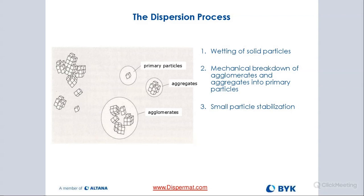Once we're at the aggregate level, the next step is to get down to the primary particle size. We use different technologies: going from agglomerate down to aggregate, we use a standard dissolver with a cowl's blade. Then going from aggregate level down to primary particle level, we use a media mill — some use three-roll mills, some use a basket mill or horizontal mill. There are many different ways to get down to primary particle size, and we'll cover some of these solutions today.